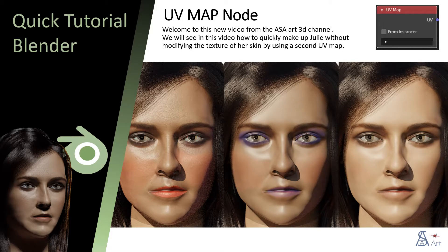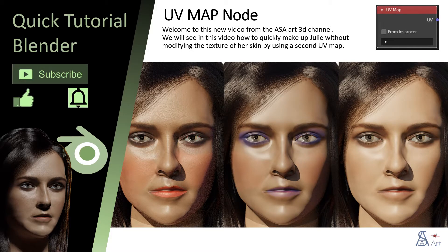Welcome to this new video from the ASA Art 3D channel. We will see in this video how to quickly make up Julie without modifying the texture of her skin by using a second UV map.